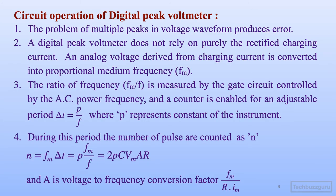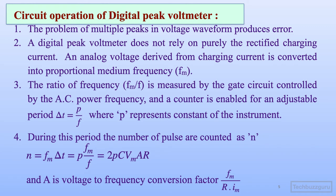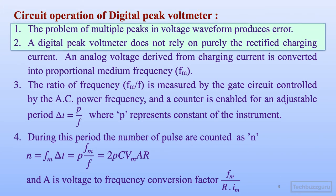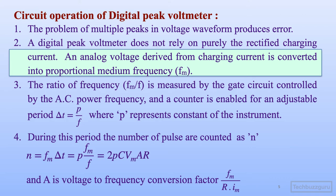This is how the digital peak voltmeter works. The problem of multiple peaks in the voltage waveform produced errors with the series capacitor peak voltmeter method, so digital peak voltmeters are used to overcome that. Digital peak voltmeters do not rely purely on the rectified charging current; rather, an analog voltage is derived from the rectified charging current and converted into a medium frequency represented by FM.